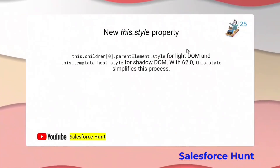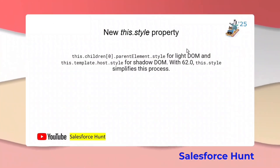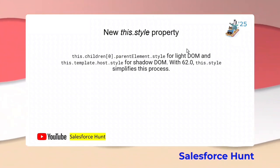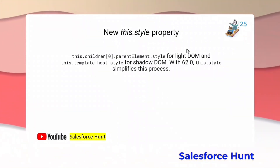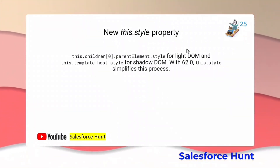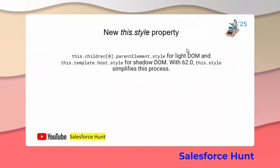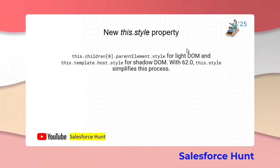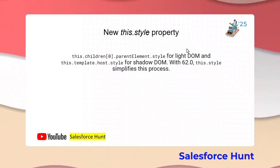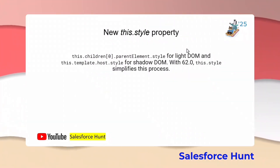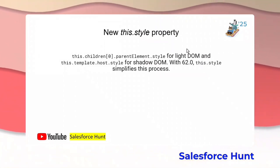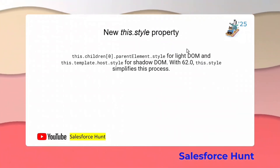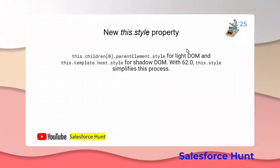The new `this.style` property is the most important feature if you are working on the old API version. Previously you had to use `this.children[0]` and `parentElement.style` for the Lightning DOM, and `this.template.host.style` for the Shadow DOM. Shadow DOM always works with encapsulated styling, but Lightning DOM is a normal DOM. With API 62.0, `this.style` simplifies this process.